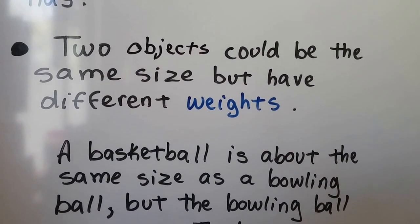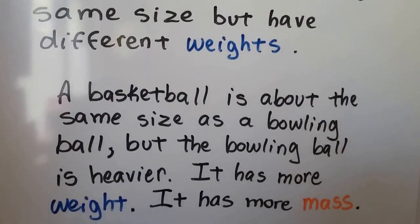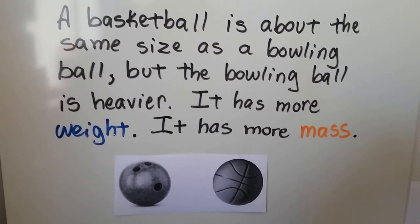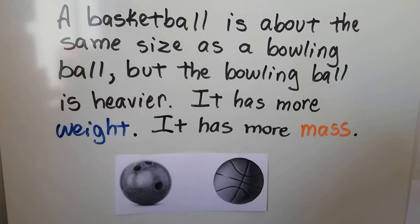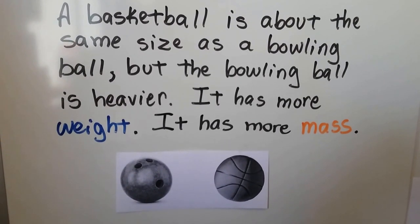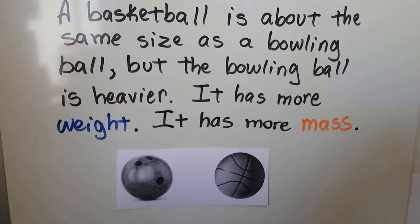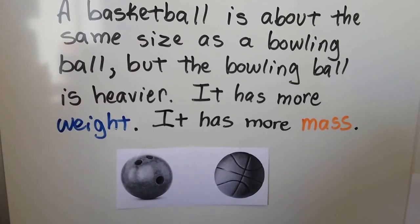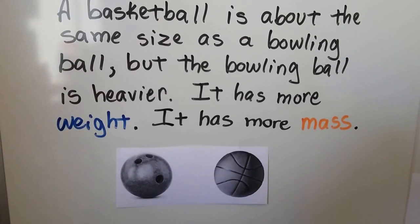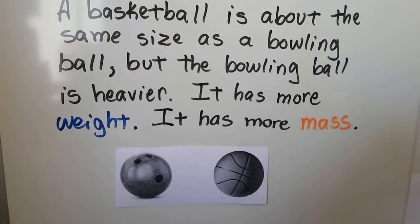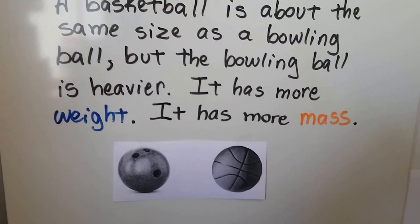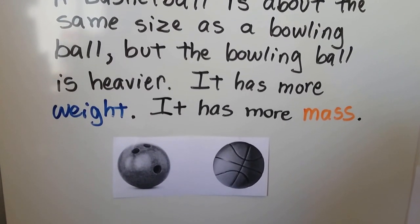Two objects could be the same size but have different weights. Look at these. A basketball is about the same size as a bowling ball, but the bowling ball is heavier. The bowling ball has more weight. It has more mass. The basketball is filled with air, and the bowling ball is filled with plastic resin. It's not hollow. The basketball is hollow with air. That means the bowling ball has more mass.